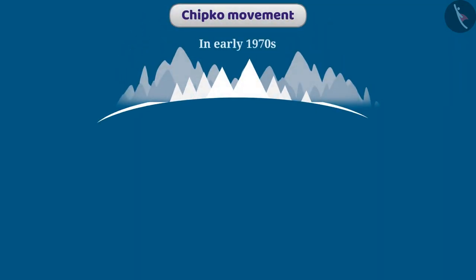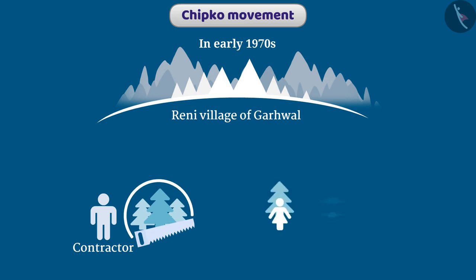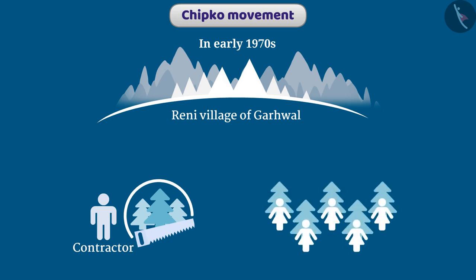In the early 1970s, a significant incident occurred in the Reni village of Garhwal, located in the high mountain range of the Himalayas. A contractor was allowed to cut down trees near the village. In protest, the women of the village embraced the trees with their arms and prevented the contractor from cutting them. The contractor eventually had to withdraw.